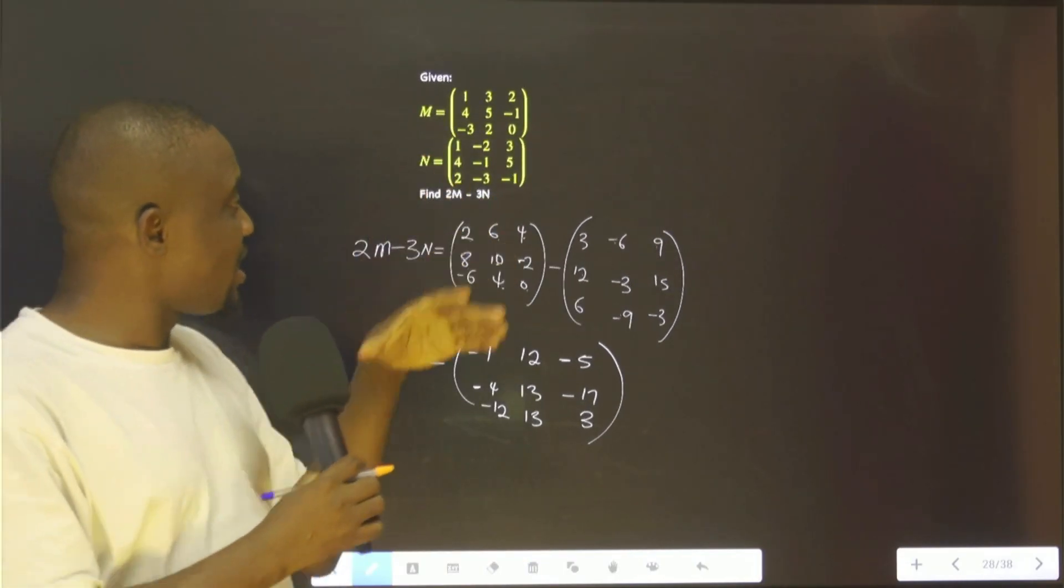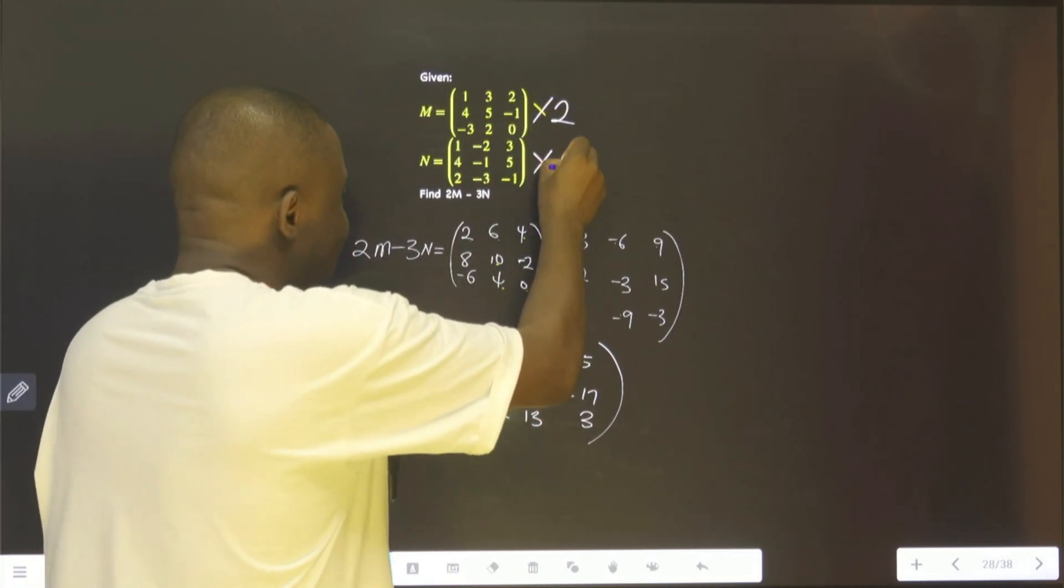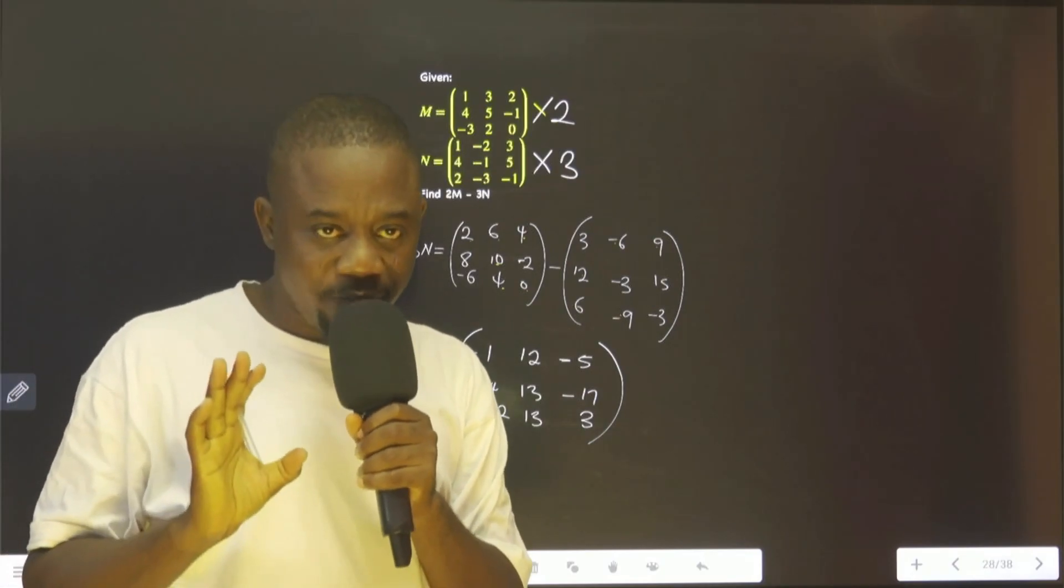So, this is the answer for this. Simply multiply this by 2. Multiply this by 3. You subtract this from this. This is very simple.